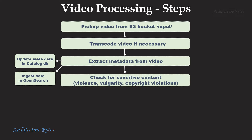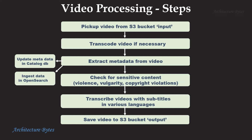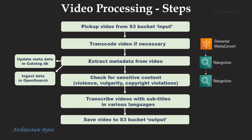Next, the video is checked for sensitive content like violence, copyright violations, etc. Finally, you can transcribe the video with subtitles in various languages, and the processed video is saved in the output bucket ready to be streamed on demand. All of these steps are orchestrated by AWS Step Functions. AWS Elemental MediaConvert can transcode the videos, while Amazon Rekognition can extract metadata and check for sensitive content. The metadata can be saved in a database and ingested into OpenSearch using Lambda functions. Amazon Transcribe and Translate can help with subtitles.